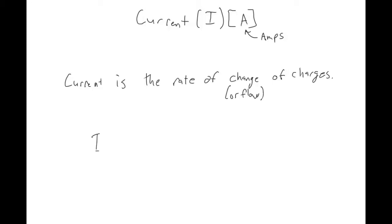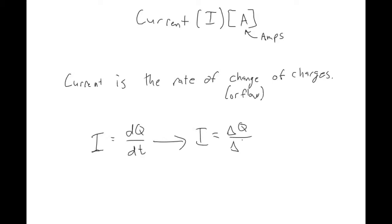We represent current with the variable capital I. It has units of amps, written as a capital A, and current is a scalar quantity. You can do this with calculus — current is the derivative of charge with respect to time — but for this class we'll write it as change in charge over change in time: Q final minus Q initial over T final minus T initial. One amp is equal to one Coulomb per second.